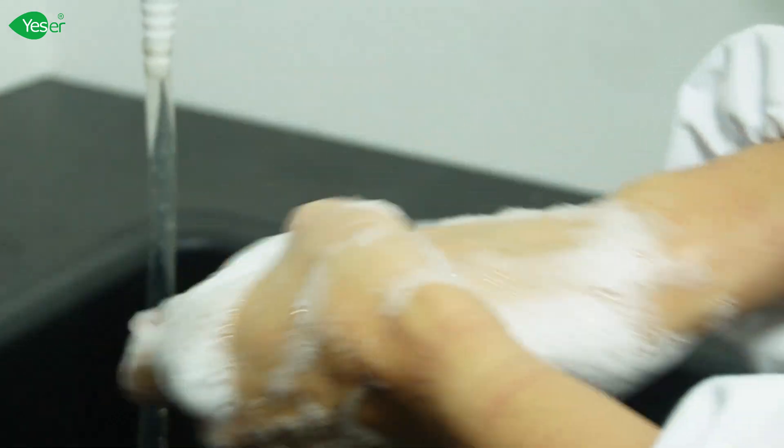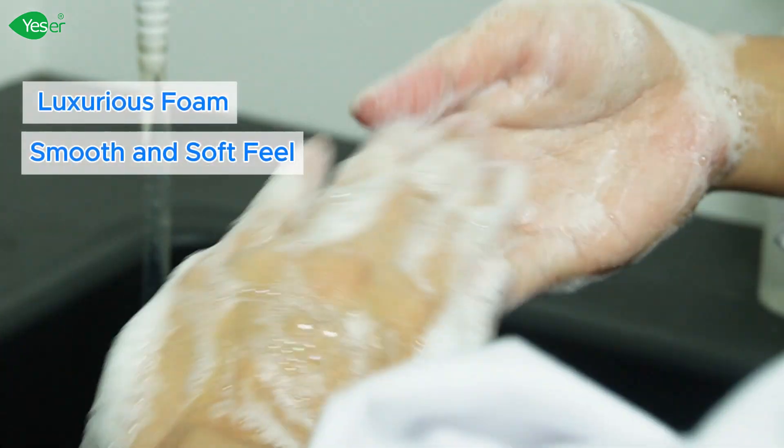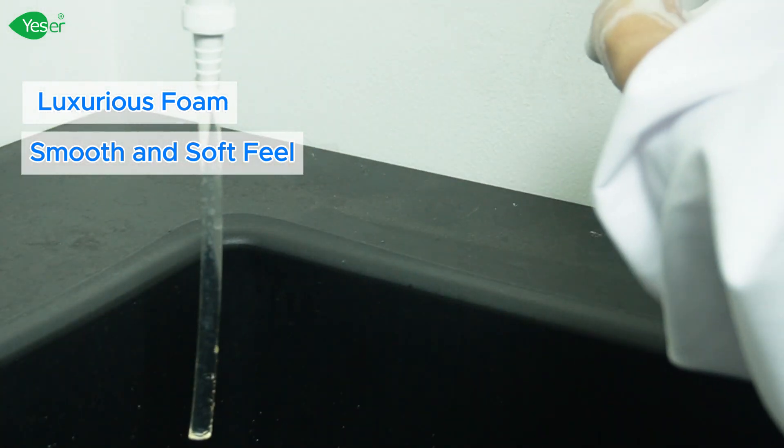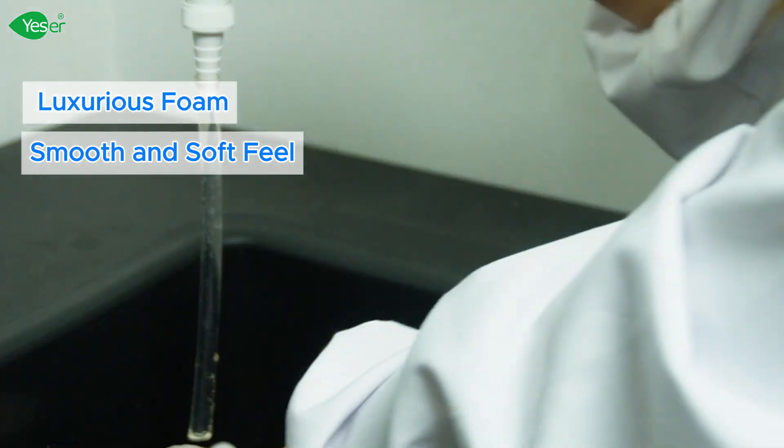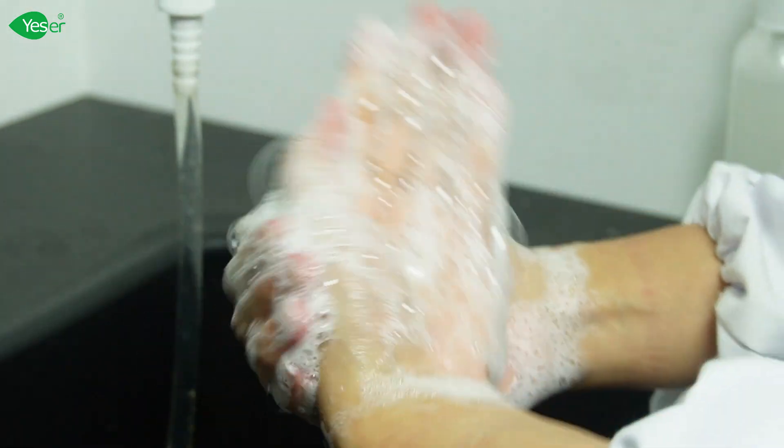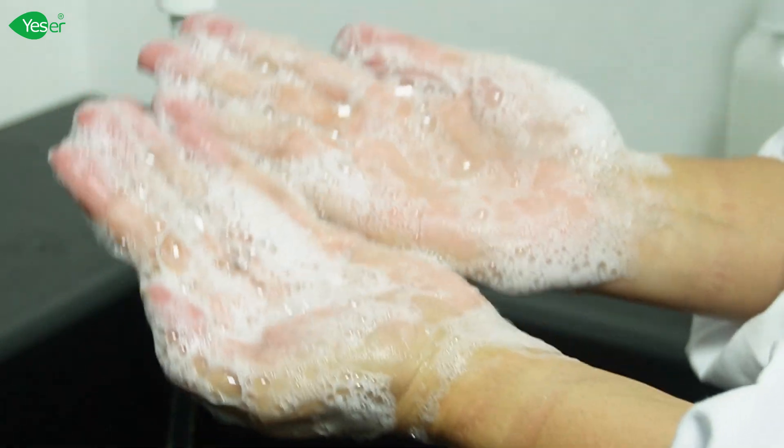As we lather the shampoo, observe the luxurious foam it produces. This is where PQ-7 and hydrolyzed silk protein really shine. Even on hands, you can feel the smoothness and softness that these ingredients impart.